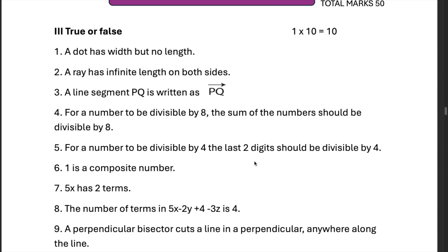For a number to be divisible by 8, the sum of the numbers should be divisible by 8. Wrong. For a number to be divisible by 4, the last two digits should be divisible by 4. True.